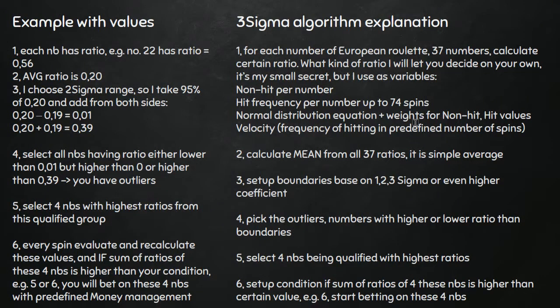Let's now take a real example with real figures and numbers, and hopefully you will get it better than just from a text explanation. So let's say you are able to calculate a ratio per number. For example, in my example here, number 22 has a ratio of 0.56. I calculate in the second step the average ratio from all 37 numbers, and let's say it is 0.20.